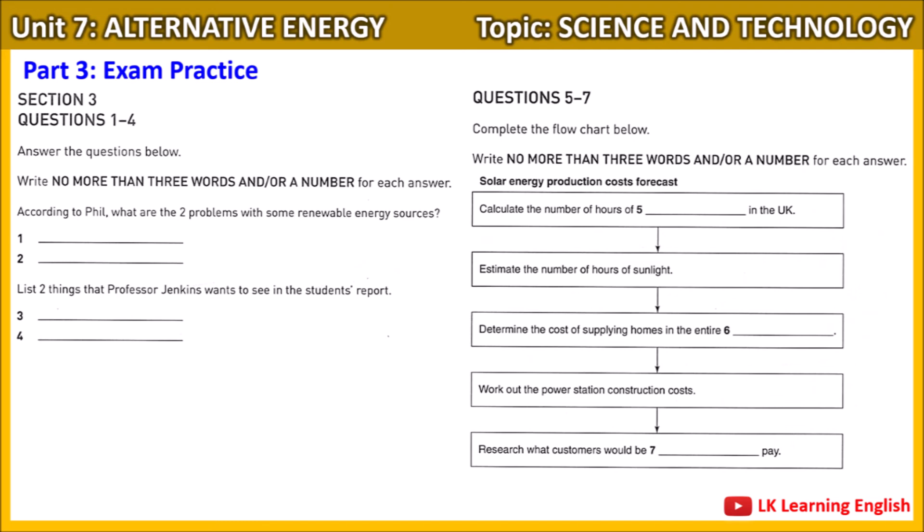And then extrapolate that to get a number for the whole country. Good. And don't forget the price of power conversion stations — this will have a significant impact on overall expenditure. And there's one more factor you haven't taken into account yet regarding the consumers. Whether they would change from traditional to renewable energy? No, but think about what might make them change. How much they would be willing to pay. Exactly. Well done.